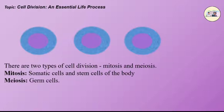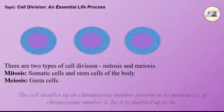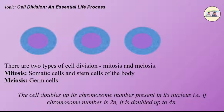Remember that before any type of cell division, the cell doubles up its chromosome number present in its nucleus. That is, if the chromosome number is 2n, it is doubled up to 4n.